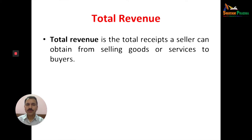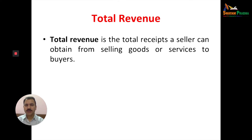Total revenue is the total receipts a seller can obtain from selling goods or services to buyers. It can be written as P × Q, where P means price and Q means quantity. The price of goods multiplied by the quantity of goods sold equals total revenue.